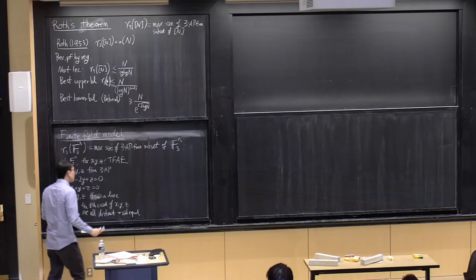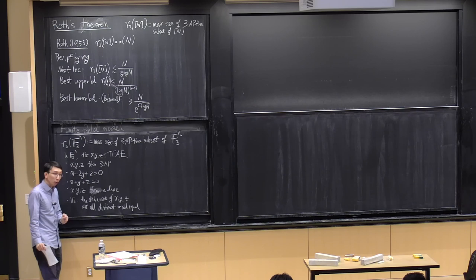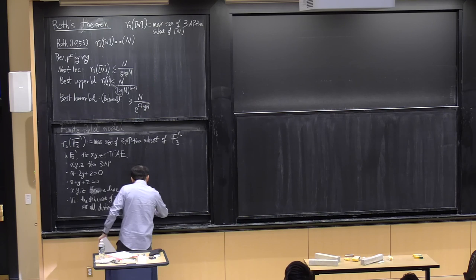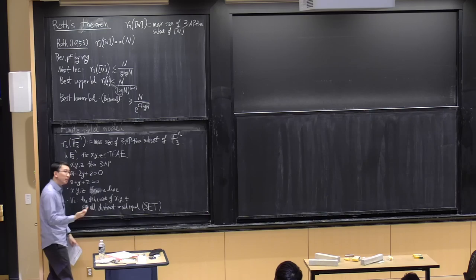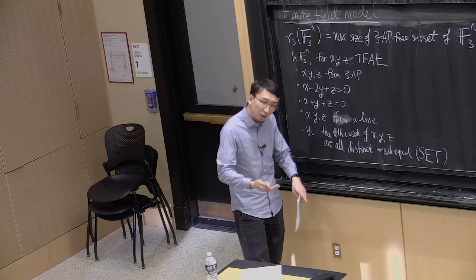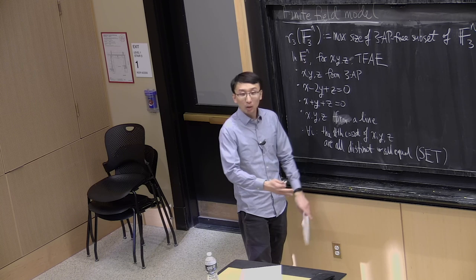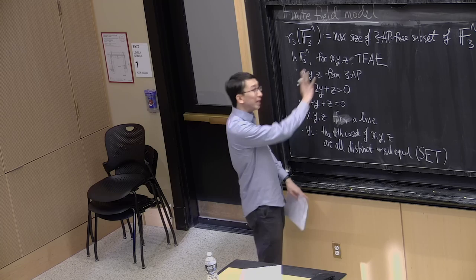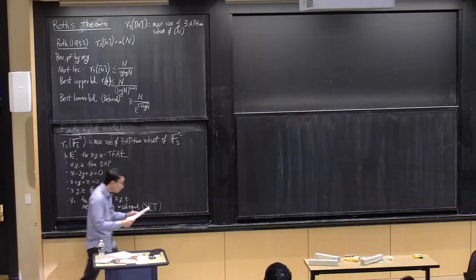That last condition has a nice interpretation in terms of the game that many of you know as SET. In the game SET, you have cards with n properties — like color, number of symbols, shape — and you want to form a SET of three cards such that for every property, they're all the same or all different. That's exactly this model. So what can we say about the maximum size of a 3-AP-free subset of F₃ⁿ?